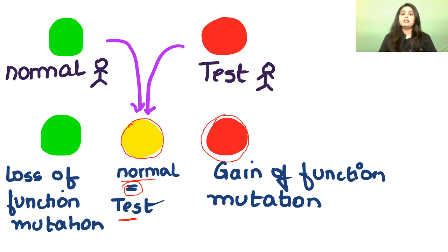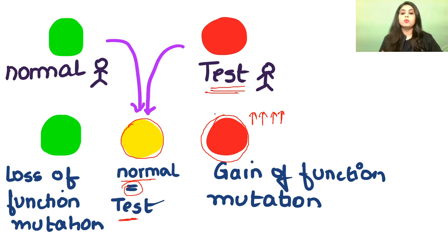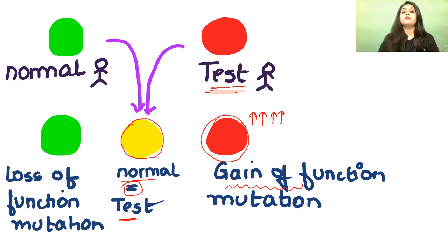So after hybridization, getting yellow means both people are normal. Getting red means the test person has a gain of function mutation. Getting green means they had a loss of function mutation because there was less red colour — their red and green did not mix equally.